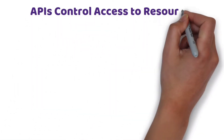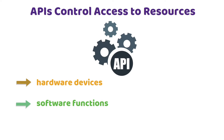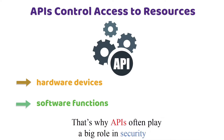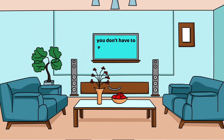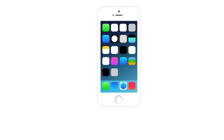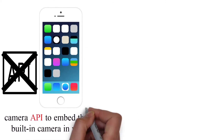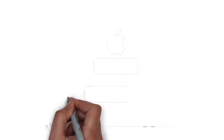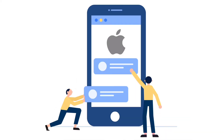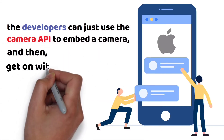APIs control access to resources. APIs are also used to control access to hardware devices and software functions that an application may not necessarily have permission to use. That's why APIs often play a big role in security. If you want to capture photos or video from the iPhone's camera, you don't have to write your own camera interface. You use the camera API to embed the iPhone's built-in camera in your app. If APIs didn't exist to make this easy, app developers would have to create their own camera software and interpret the camera hardware's inputs. But Apple's operating system developers have done all this hard work, so developers can just use the camera API to embed a camera and then get on with building their app.